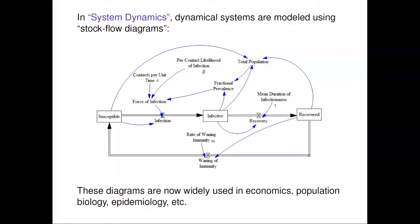Links describe how you compute some variables from other variables. Not drawn in the picture are the specific functions whereby you calculate new variables from other variables, but you should think of those functions as part of the whole model. For example, if I annotated this model, I would tell you that the force of infection was this constant times this times this, or that this was equal to infected divided by total population. So you should think of little functions attached to those variables.